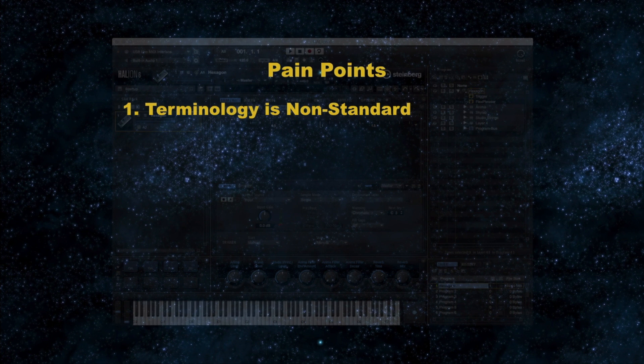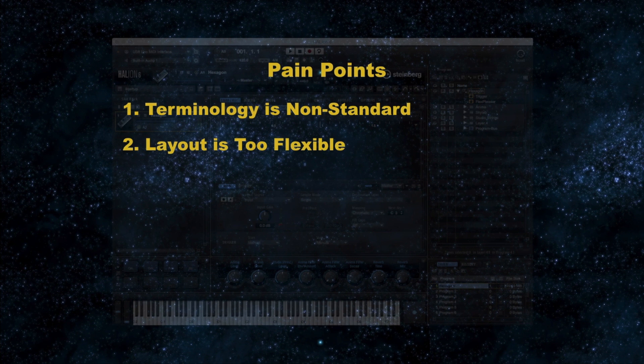Let's look at the most common pain points that HALion users generally seem to express. The first is that the terminology is non-standard — it's not even close. This is a problem with a lot of VSTs; unlike a car where the steering wheel always does the same thing, they have different functions and features with no requirement to call anything by the same name. That is even more pronounced with HALion because they've really gone off further in their own direction. The second pain point, in my opinion, is that the layout is a little too flexible, and we'll talk about how to avoid that.